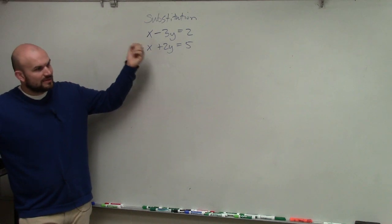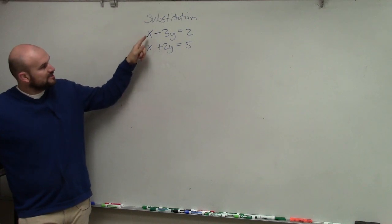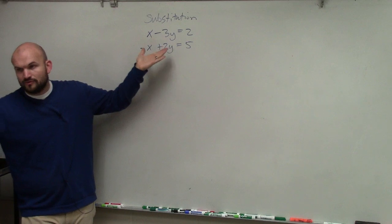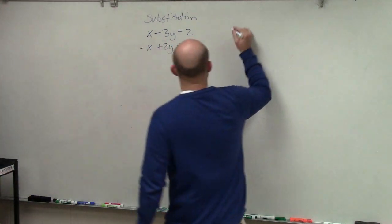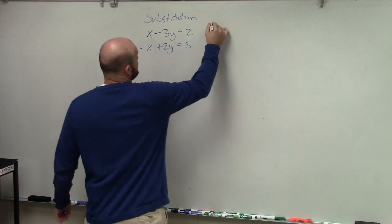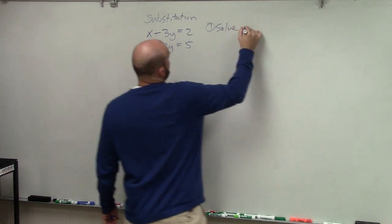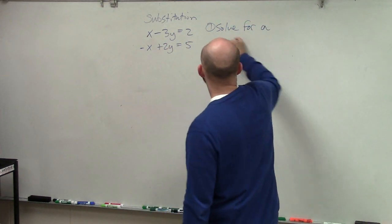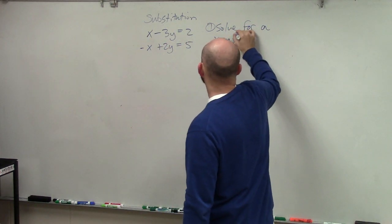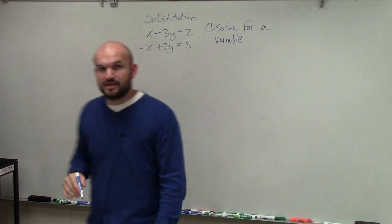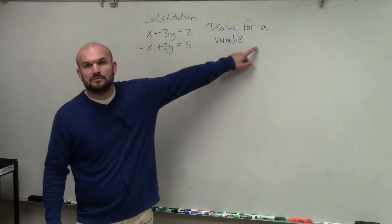Now, it's probably easiest - the reason why we like having a coefficient of 1 is because it's very easy to solve for the variable. So the first step, what you're going to do is basically solve for the variable.